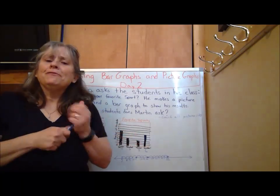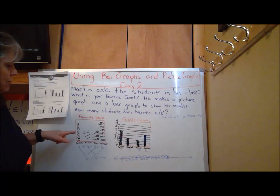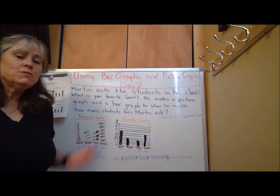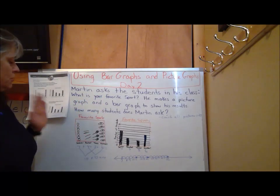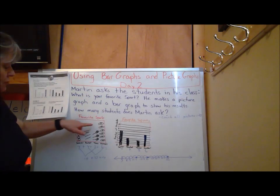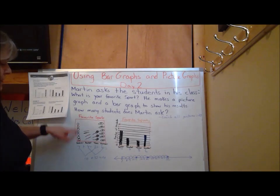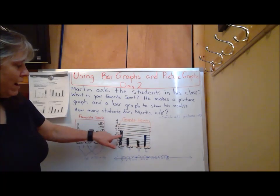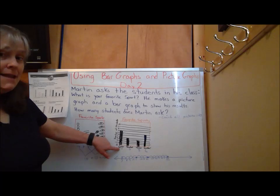What other information could you gather from this bar graph or this picture graph? What if I said to you, what was the favorite sport of all? What did kids like the most? So looking at the picture graph, it's a little tricky because I would think it was the footballs. But then when I count them, I know it's really soccer. If I look at my bar graph, I can tell right away that more kids liked soccer than anything else.